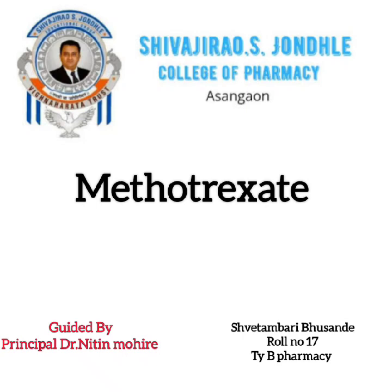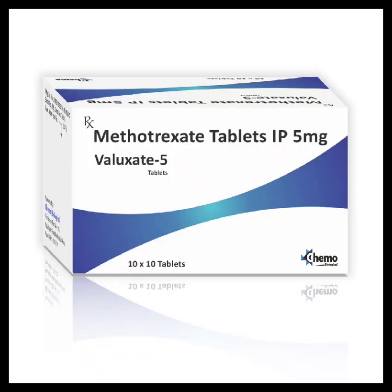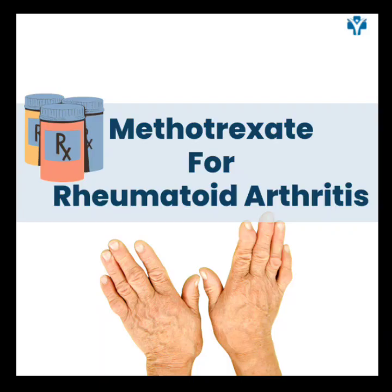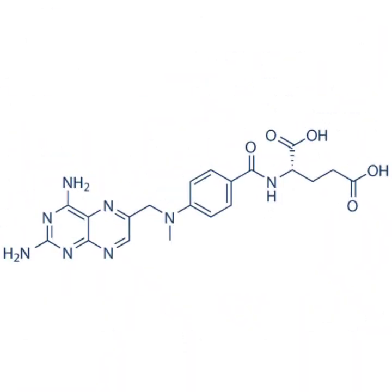Today we are discussing the drug Methotrexate. Methotrexate is an anti-metabolite agent with anti-inflammatory properties and possibly immunosuppressive effects. In 1971, the US FDA approved Methotrexate for use in psoriasis, and for rheumatoid arthritis in 1980. Mainly, Methotrexate has anti-cancer activity and is used in chemotherapy.